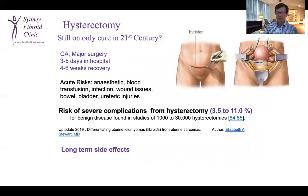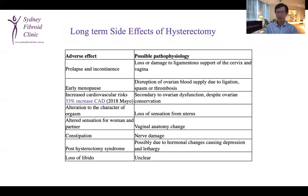Hysterectomy has traditionally been regarded as the only cure for adenomyosis. However, is this still true in the 21st century? It doesn't matter how hysterectomy is done — laparoscopically, robotically, or transabdominally — it remains a major surgical procedure. The risk of severe complication from hysterectomy remains at 3.5% to 11%, even in 2019. Long-term side effects include prolapse and incontinence, early menopause by 4 years, and increased coronary artery disease by 33%, even if you leave the ovaries behind. Other adverse long-term side effects include sexual dysfunction and constipation, probably related to nerve damage during resection.